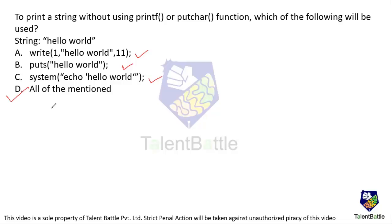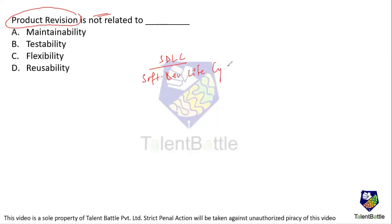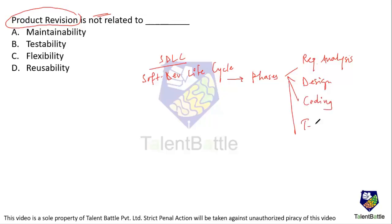Next question: product revision is not related to what? The options are maintainability, testability, flexibility, and reusability. This question corresponds to SDLC — Software Development Life Cycle. The phases of SDLC include requirement analysis, design, coding, testing, and maintenance/deployment.